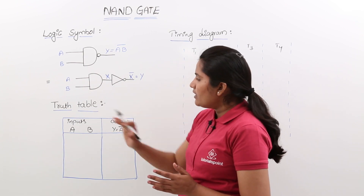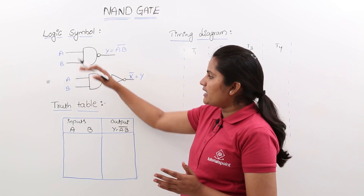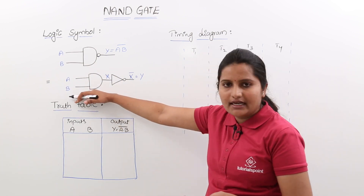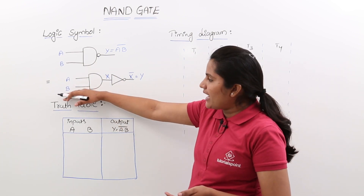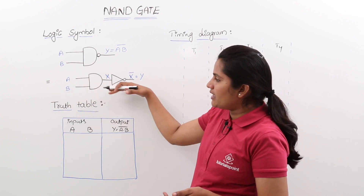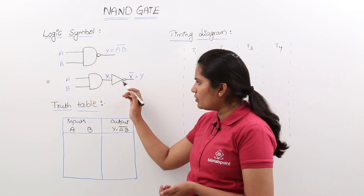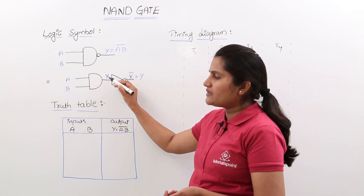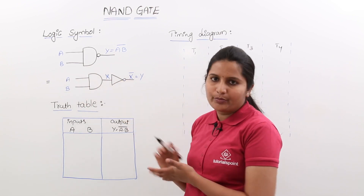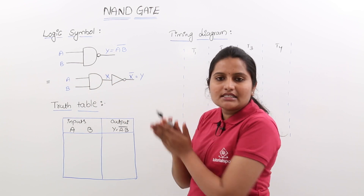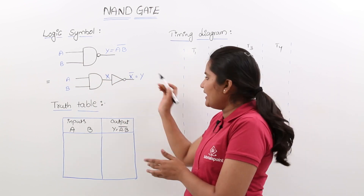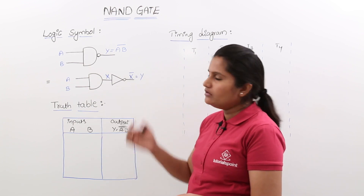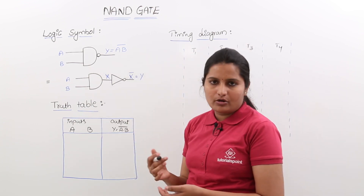We can also design the NAND gate like this — using one AND gate followed by a NOT gate, which is also equivalent to a NAND gate. For example, if you are providing A and B to the AND gate, the value X is equivalent to A into B. When X is given to the NOT gate, you are getting X bar as output. So Y is equivalent to A into B whole bar, same as before.